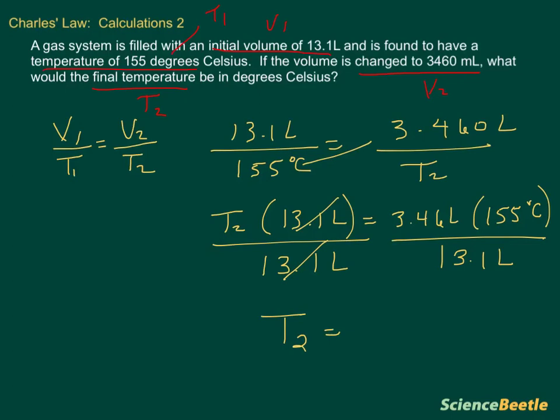If we go ahead and do the math for this section, we're going to take 3.46 liters times 155 and then divided by 13.1. That should give us the answer that we want. We're going to take 3.46 multiplied by 155 divided by 13.1.